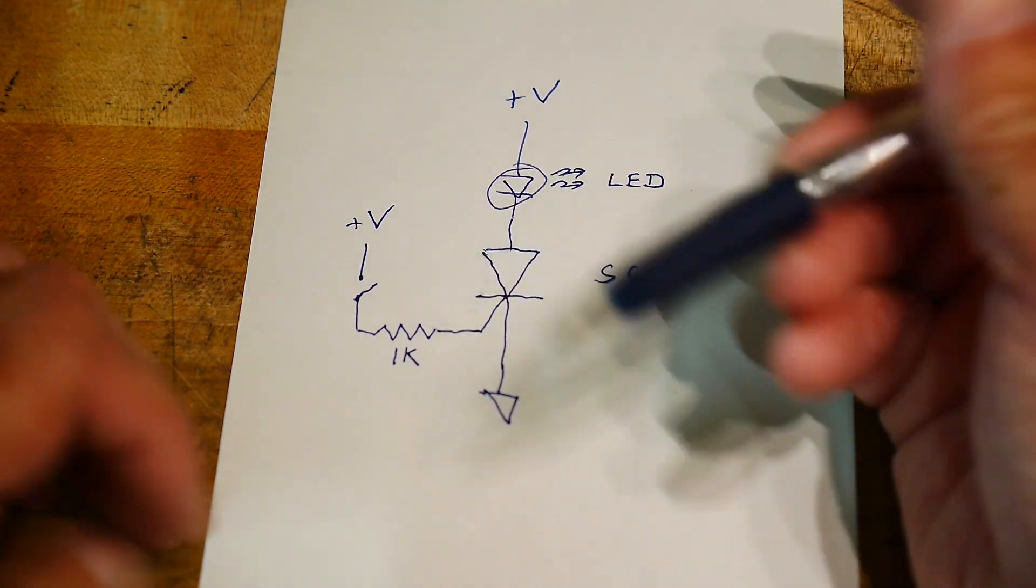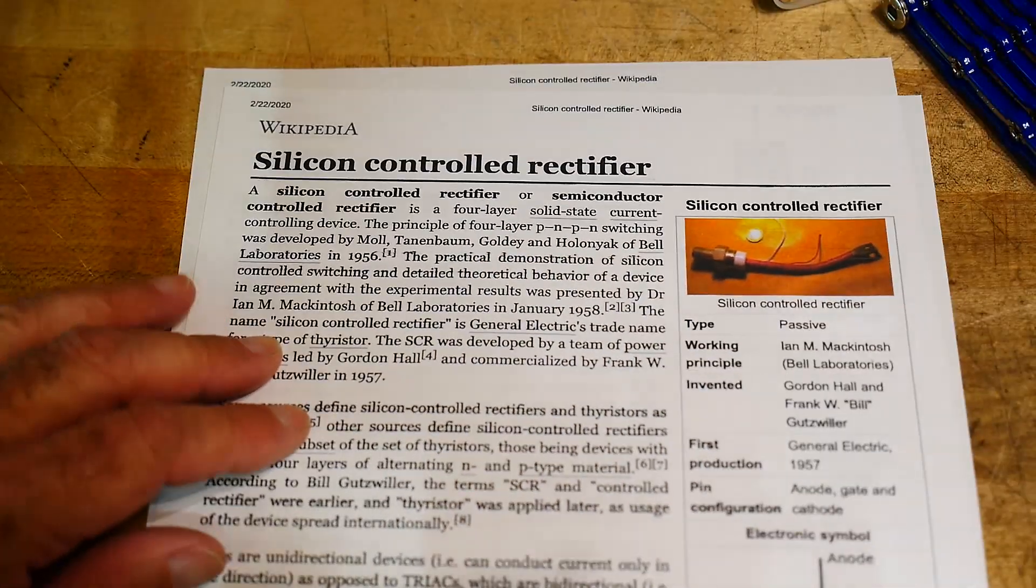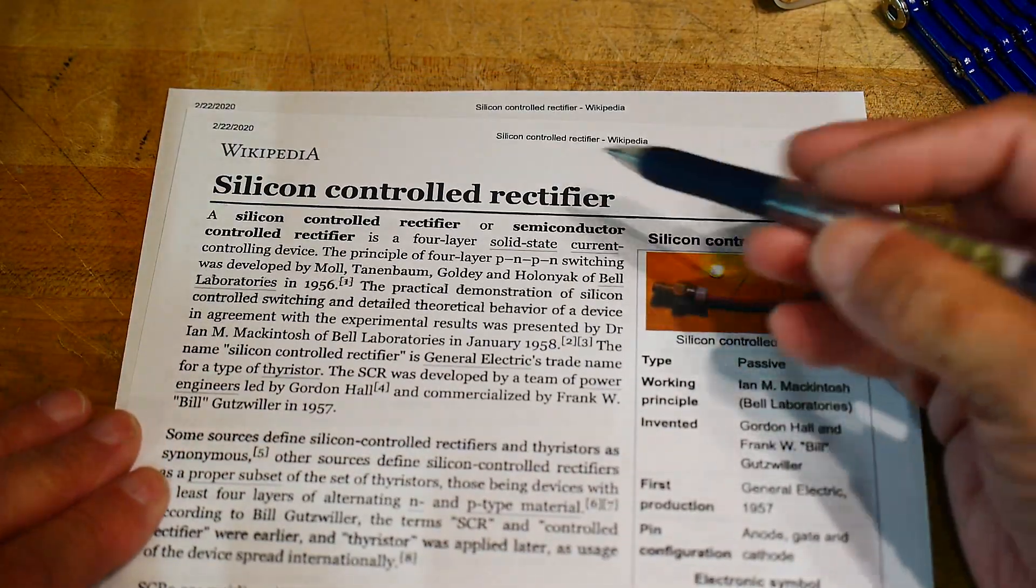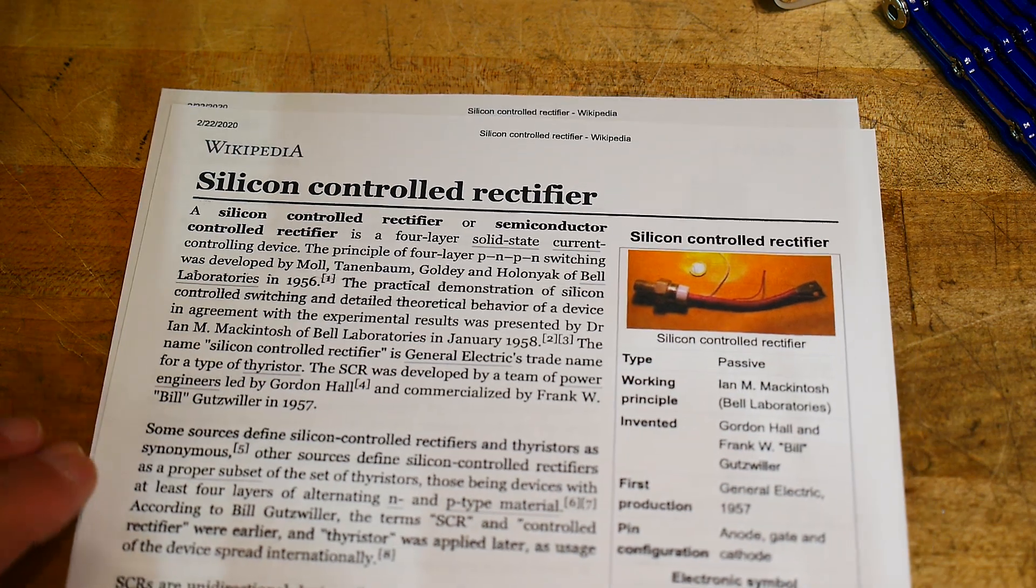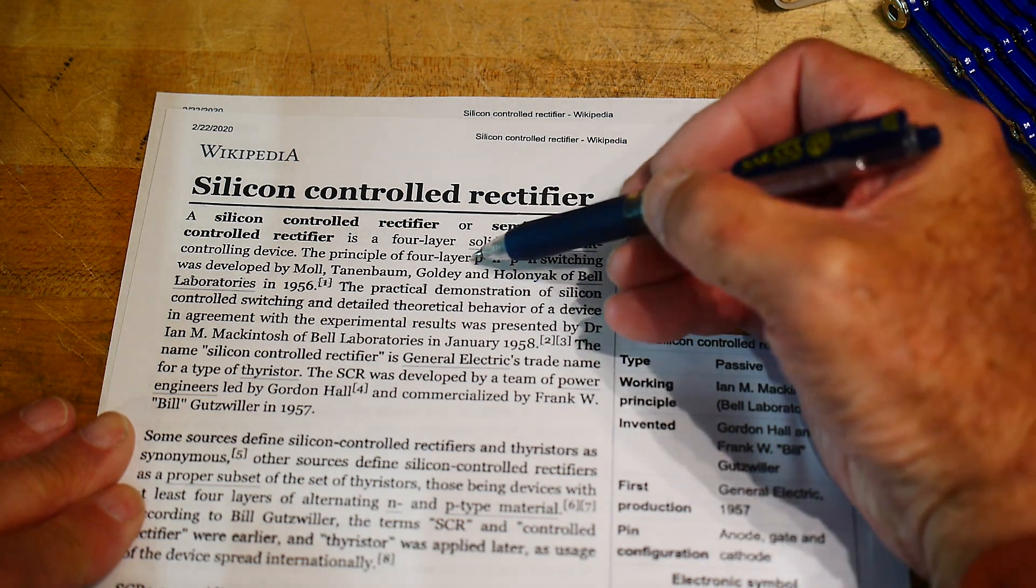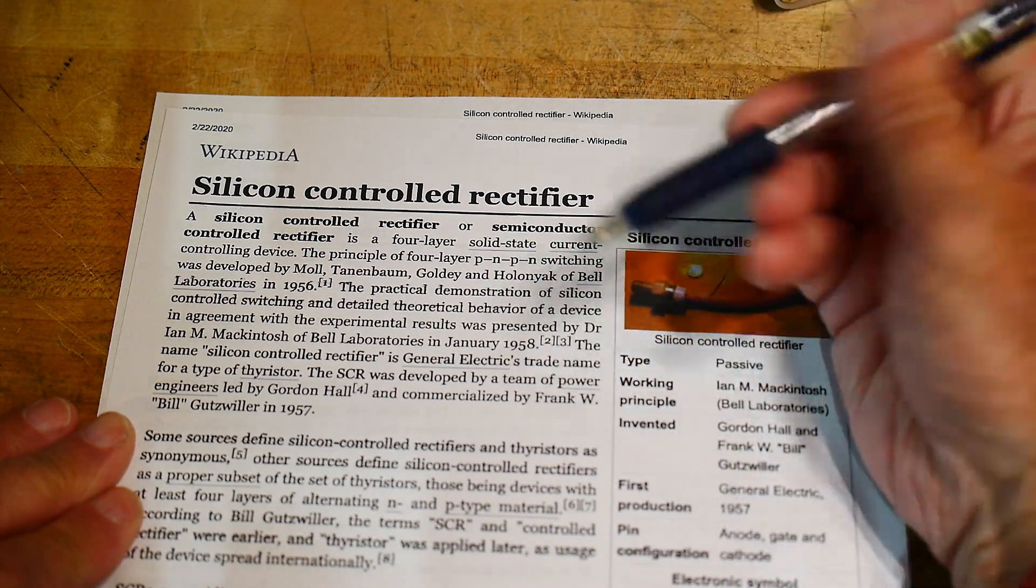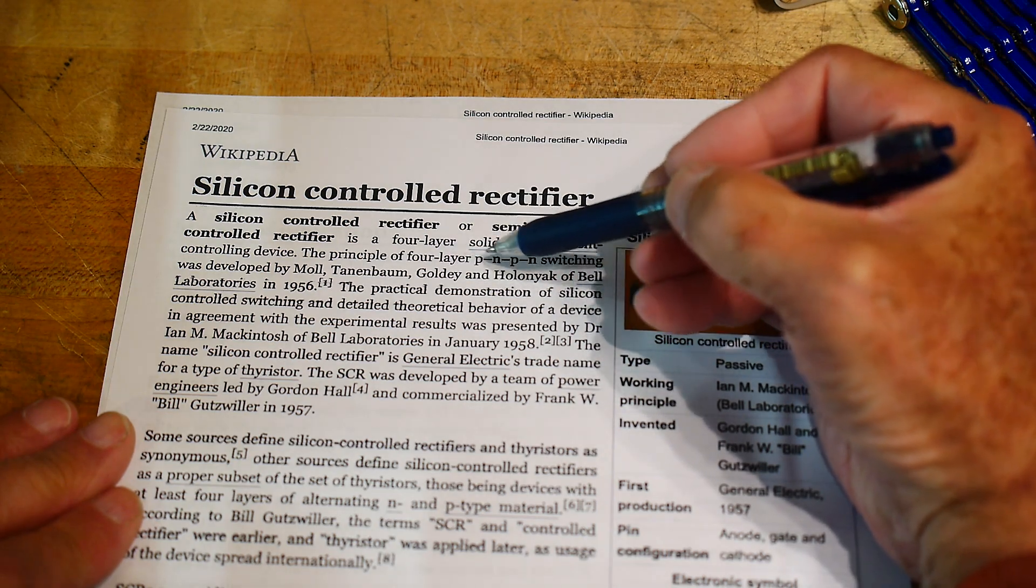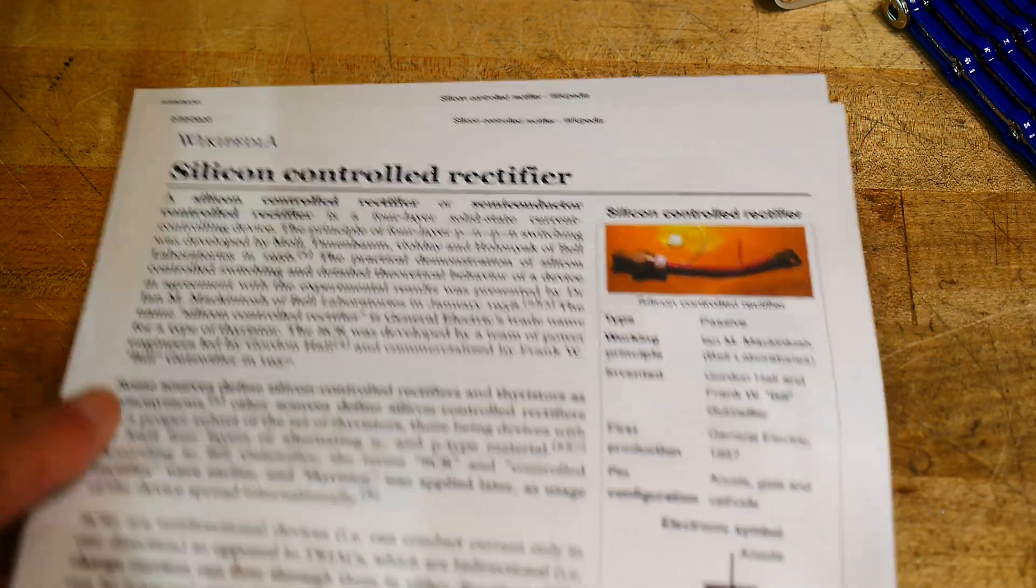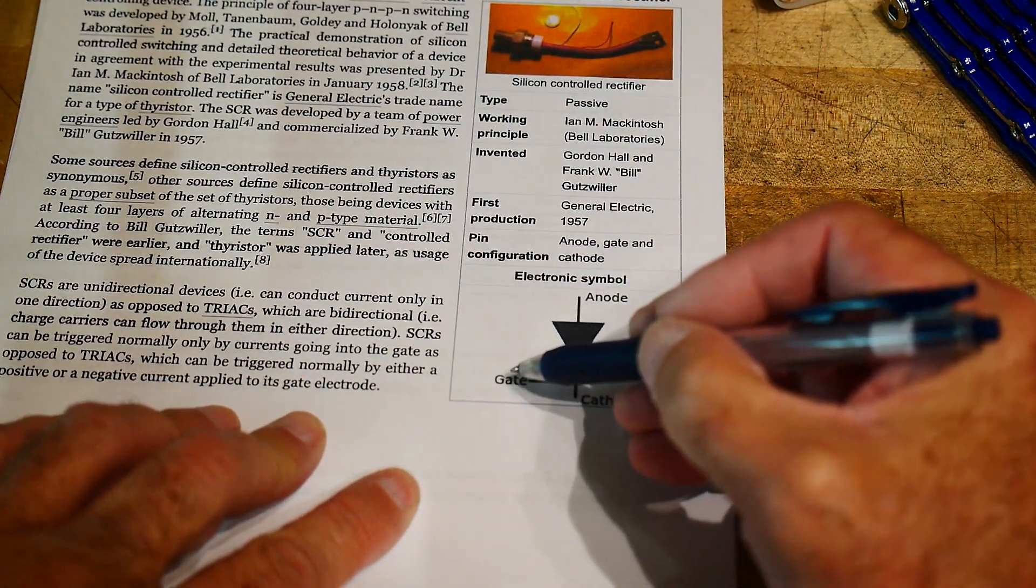So if you go to the Wikipedia page on silicon-controlled rectifiers, it's a great little article on what these things are. And they're a very strange four-layer PN-PN diode. So it's like two diodes in series, a PN junction and then another PN junction. And again, the symbol for it is this, anode, cathode, and gate.